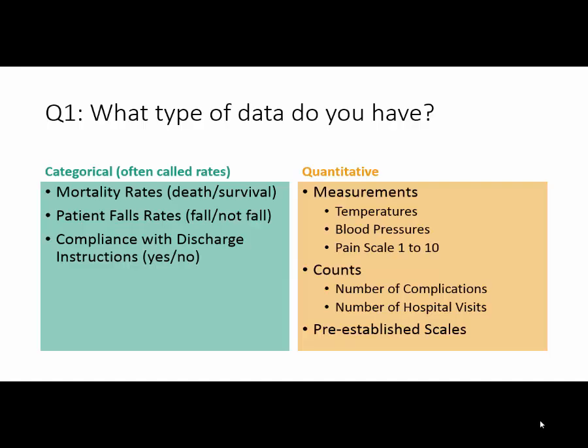Question 1: What type of data do you plan to collect? Data can be broken into two classes: categorical and quantitative. Quantitative data are usually measurements — most things you measure about your patients are quantitative, like height, weight, blood pressure, body temperature, vital capacity, or a pain rating on a scale of 1 to 10. But sometimes when you're counting something, that's also quantitative data — though I have to be a little careful about that distinction.